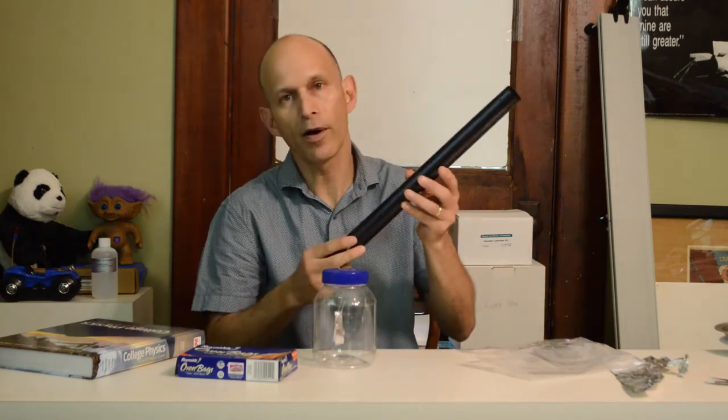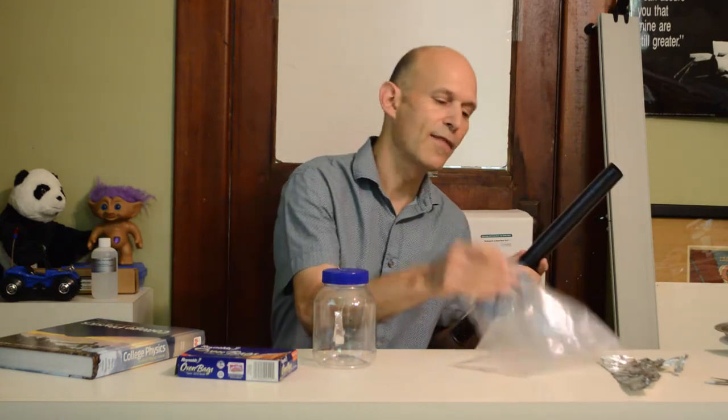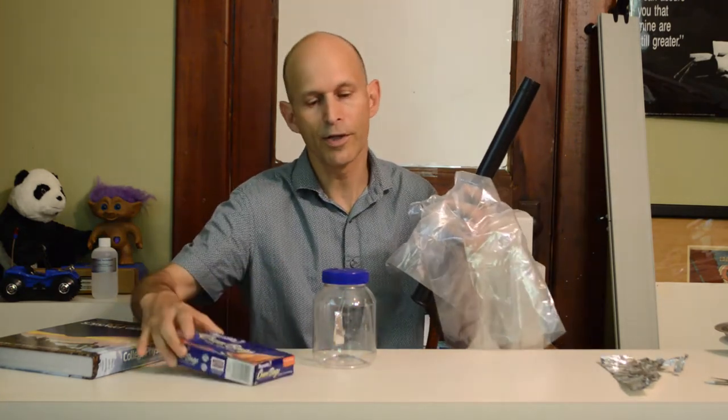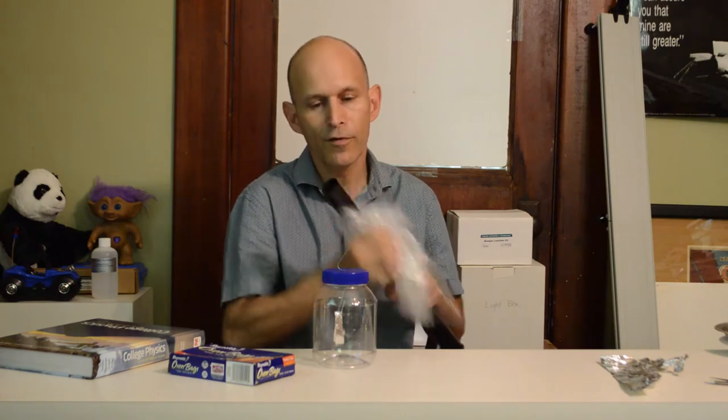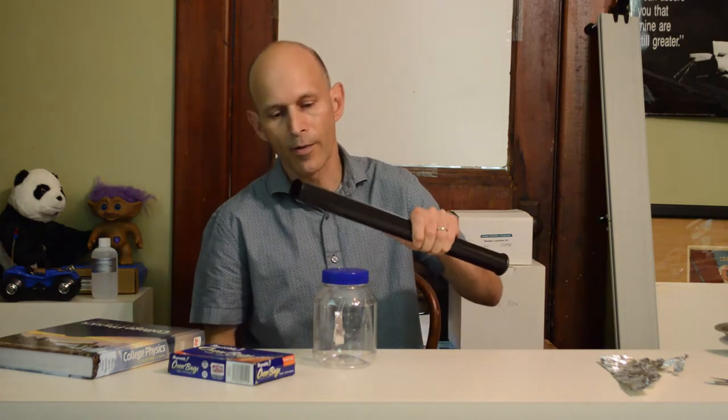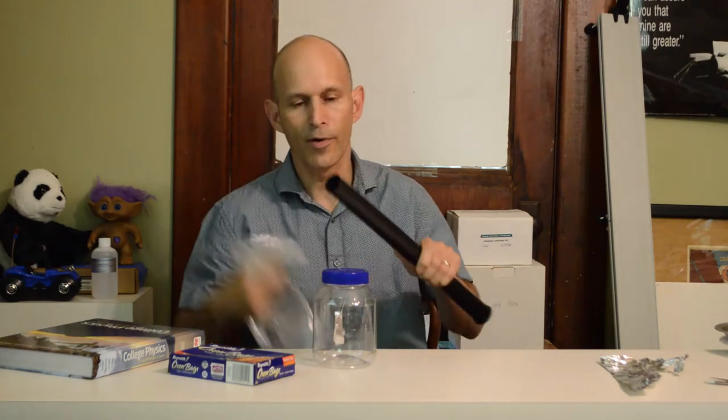This is part of a golf tube that's sold to protect golf clubs, and this is an oven roasting bag. When you rub these two together, the golf tube gets a pretty good charge, and when I bring it close to the top of the electroscope, the leaves of the electroscope separate.